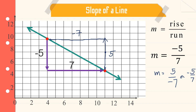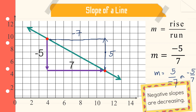Notice that the slope we solved is negative. And if we read the graph again from left to right, this time it is decreasing. So, negative slopes are actually decreasing.